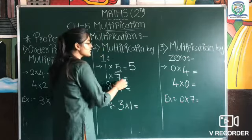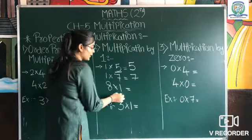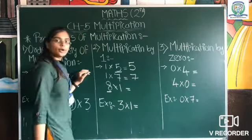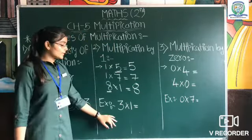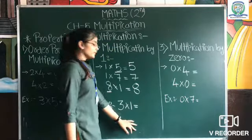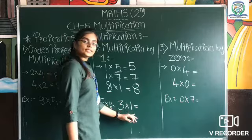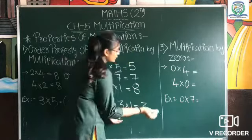One into seven gives the number itself, which is seven. Eight into one also gives the number itself, which is eight. Another example: 3 into one. Three is a number, and when we multiply it by one, the answer is three itself.